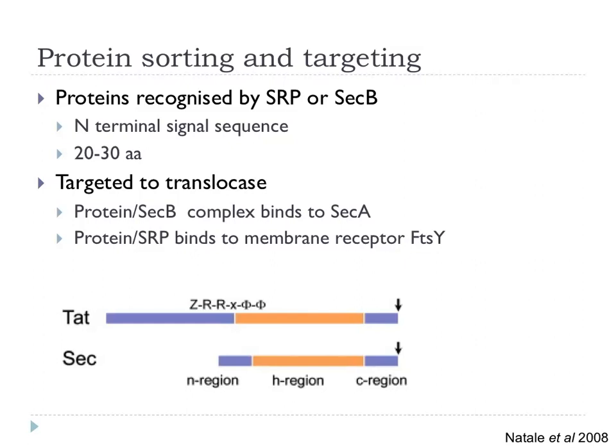If we look at the structure of the signal peptide, we can see the N-region, which is typically polar — a methionine and a handful of other residues. Then there is the H-region, which is hydrophobic and looks in many ways like a transmembrane domain, because it is actually targeted to the membrane. Then there is the C-region — a short tail of a few polar residues — and then there is a cleavage site where the signal peptide gets cleaved off. There is also a second system called TAT which has a similar kind of signal peptide but with a twin arginine motif.